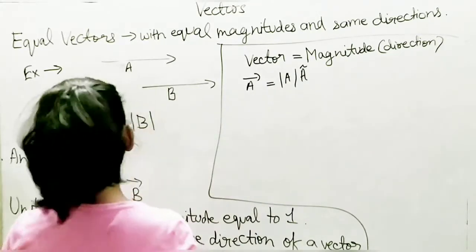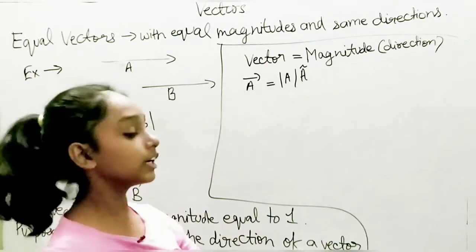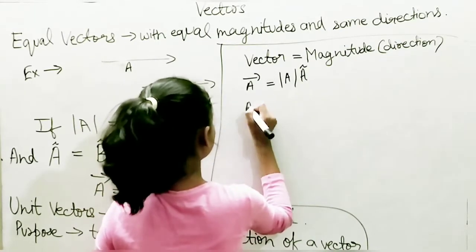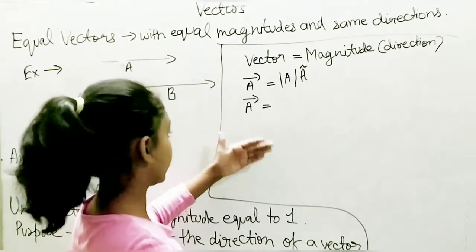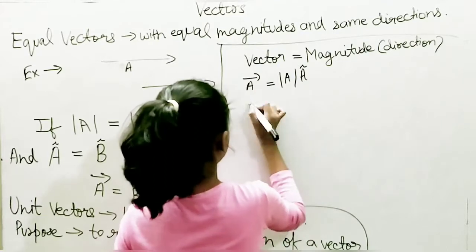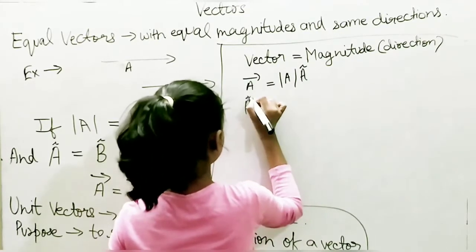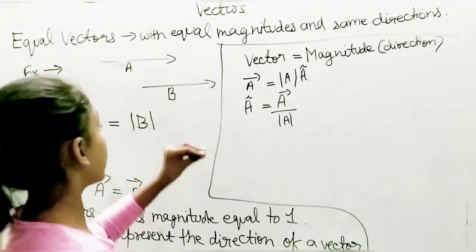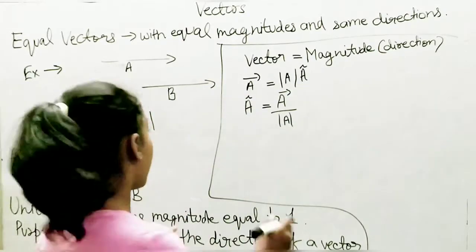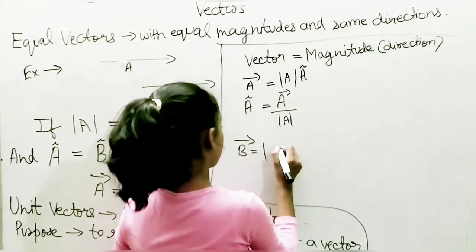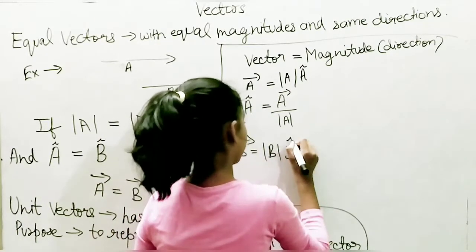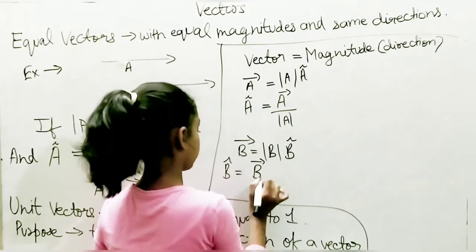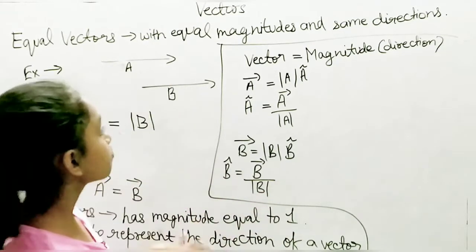Since unit vectors are mainly used to represent the direction of a vector, to find the direction A-hat, we divide vector A by its magnitude A-mod. Similarly, for vector B: vector B equals magnitude B into B-hat, and to find the direction, B-hat equals vector B divided by B-mod.